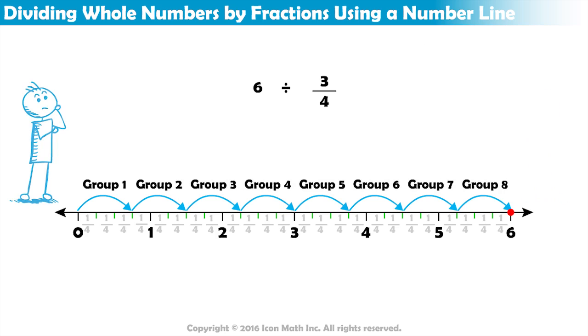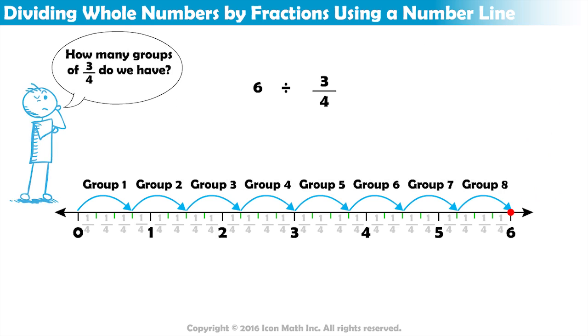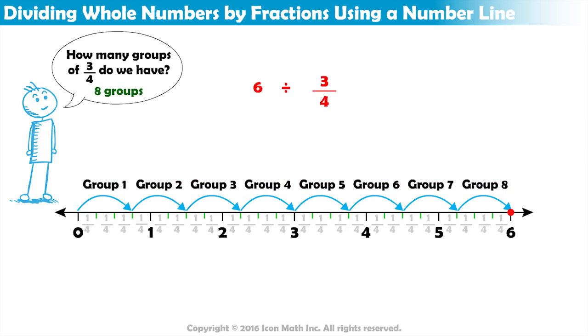How many groups of 3 fourths do we have? There are 8 groups. So, 6 divided by 3 fourths equals 8.